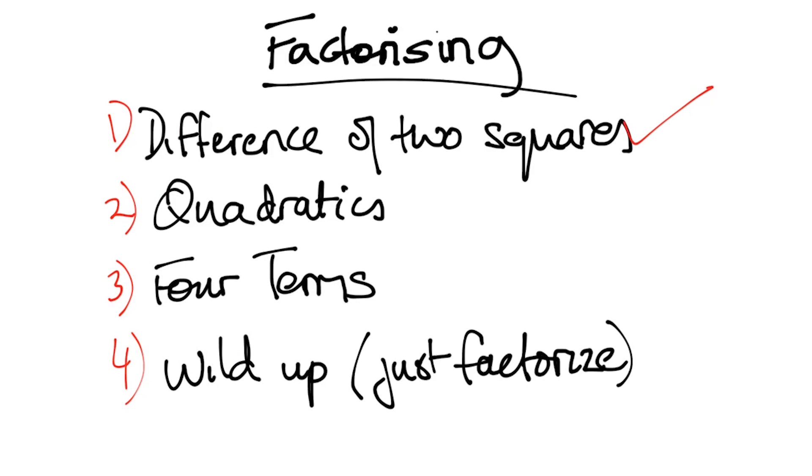These are the ways: difference of two squares, quadratics, four terms - I'll explain what that means - and wild up scene, which is just factorizing. I'll go through each one of these individually, do examples from past paper questions, and at the end of the video I will give you questions from different past papers and you will choose which method you think you need to do. Just a little quick revision one day before the exam, you know.